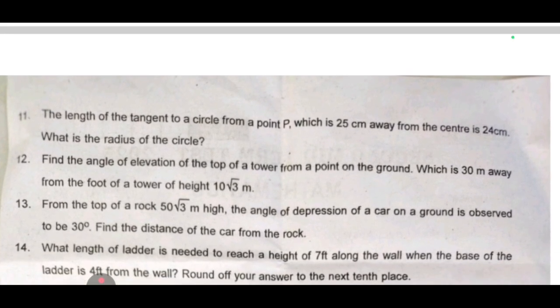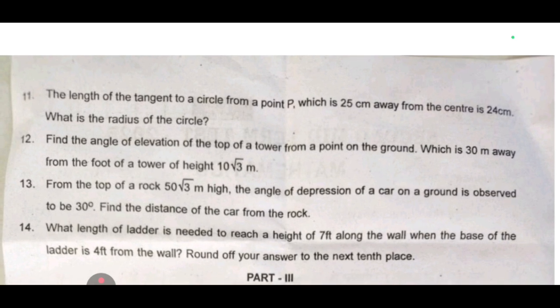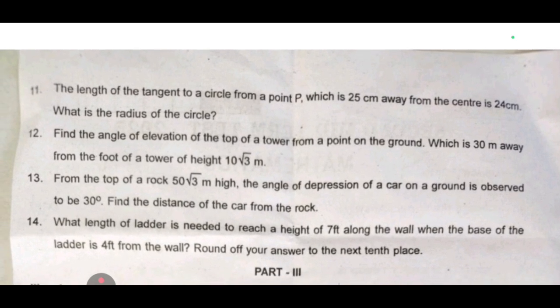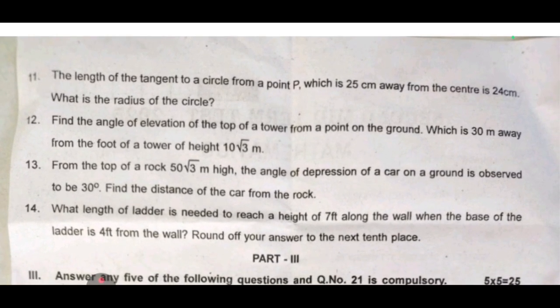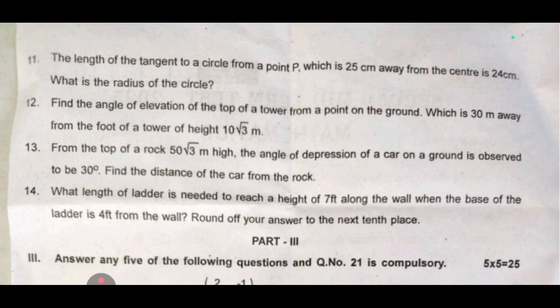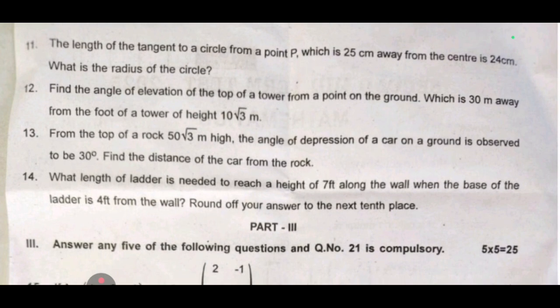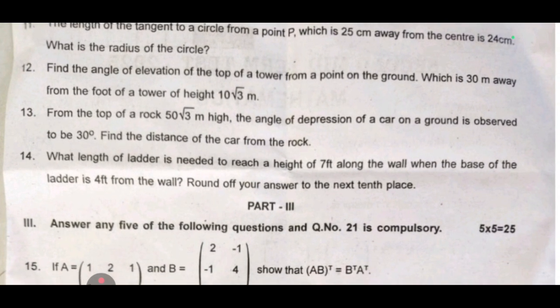12th one: find the angle of elevation of the top of a tower from a point on the ground which is 30 meter away from the foot of a tower of height 10 root 3 meter. 13th one: from the top of a rock 15 root 3 meter high the angle of depression of a car on a ground is observed to be 30 degree, find the distance of the car from the rock.